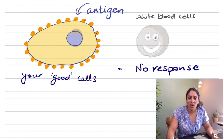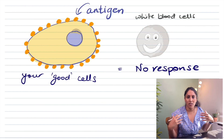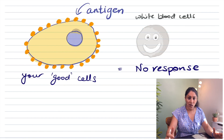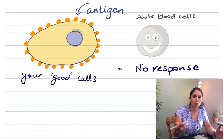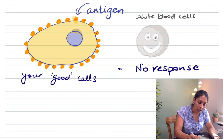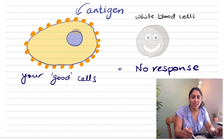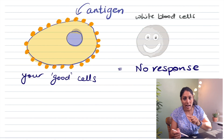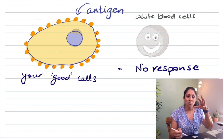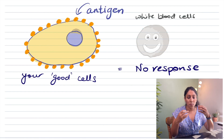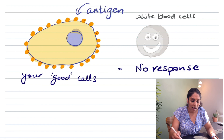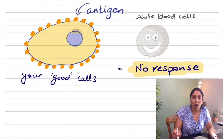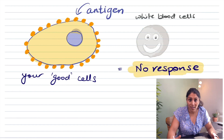You might ask: why don't white blood cells kill our own cells? White blood cells recognize our own cells because they also have antigens — proteins on the outside of the cell. Because they recognize these as belonging to our body, there is no immune response triggered against them.